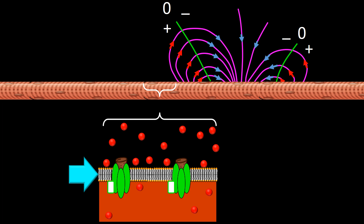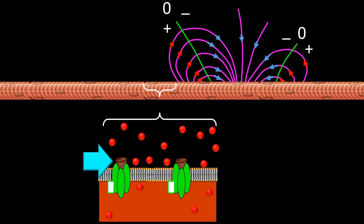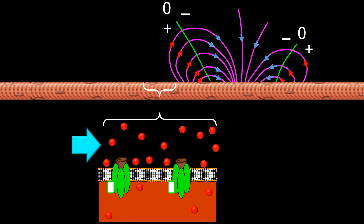The cellular membrane, voltage-gated sodium channel, voltage sensor — the white color indicates that it is not activated and will change to purple when activated — the cork indicates that the channel is closed. This is the intracellular space, this is the extracellular space, and the red dots are sodium ions.